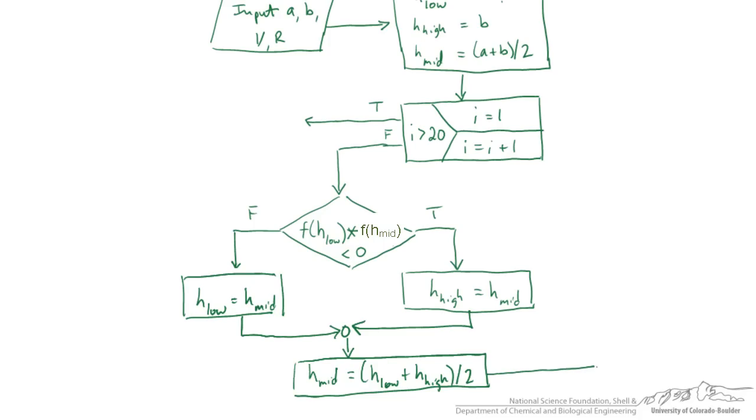And then when we're done with that, we actually go all the way back here. We increment our i by one more. So now i is going to be 2. Is 2 greater than 20? No. We're going to keep going. We're going to do this 20 times and we're doing the bisection method and zooming in on the actual root of our equation.